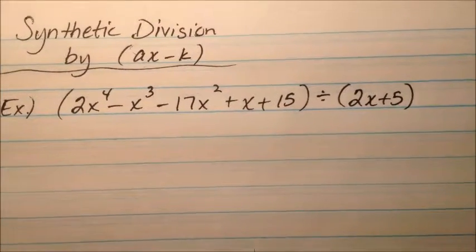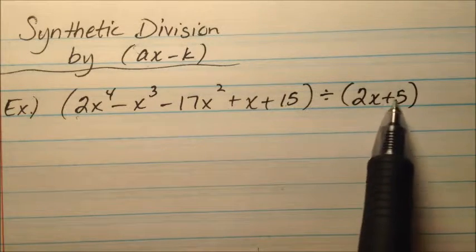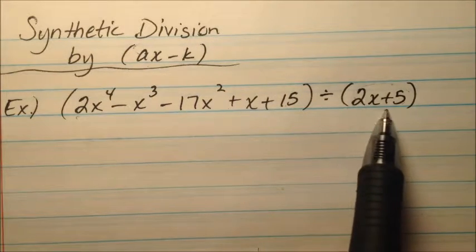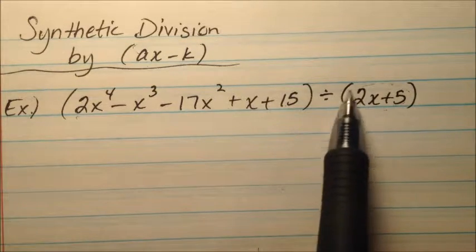So I have an example here. This polynomial we saw in the previous video, divided by... well, this is not in the form x minus k. It's 2x plus 5, so my leading coefficient is not 1.